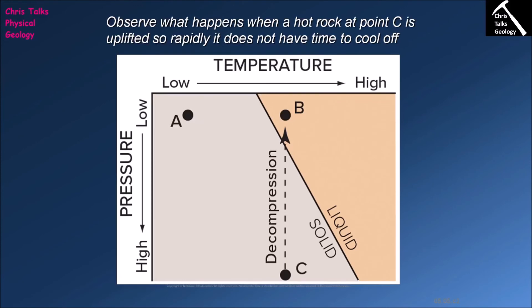What about our other option — changing the pressure? For sample A, decreasing the pressure would do nothing because it remains in the solid field. But if our rock is at point C — moderate temperature but very high pressure, where the pressure is what's stopping the rock from melting — if we decrease the pressure whilst keeping the temperature constant, it will hit the solidus, start melting, and eventually enter the liquid field. This is referred to as decompression melting: when you take a rock that's very hot and under high pressure and decrease the pressure quickly, that encourages the minerals to begin melting.